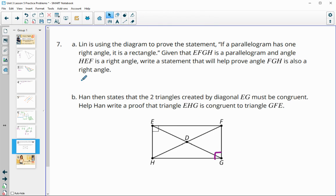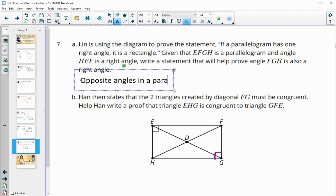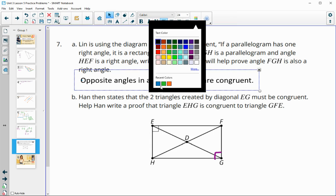And that would be that we know that opposite angles in a parallelogram are congruent. So we know that. So if this one's the right angle, then we would use the fact that we know that opposite angles are congruent in order to prove that the other one is a right angle.